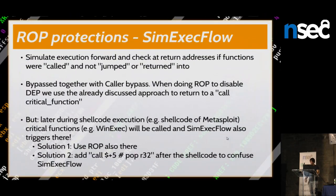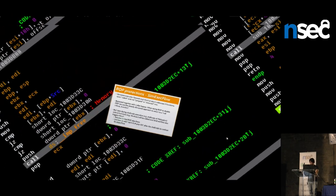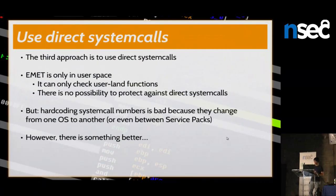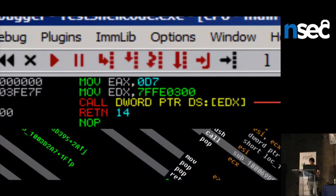The last ROP protection is SimExecFlow. It's the same as the call mitigation but applied to all return addresses on the call stack. If you bypass the call mitigation, this protection is also bypassed by default — no additional work needed. Of course the Offensive Security approach of disabling all protections via the global flag is no longer working for EMET 5.2.